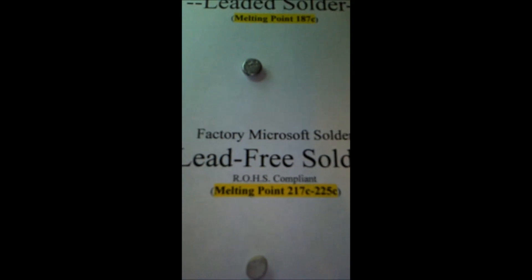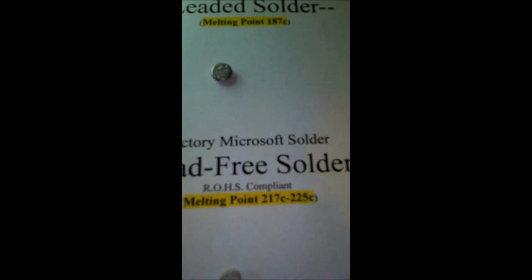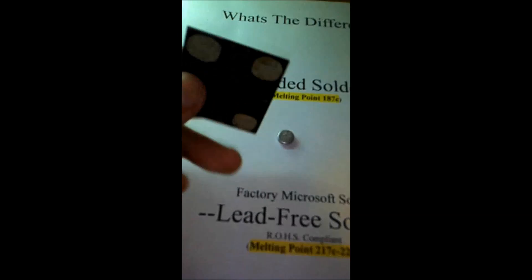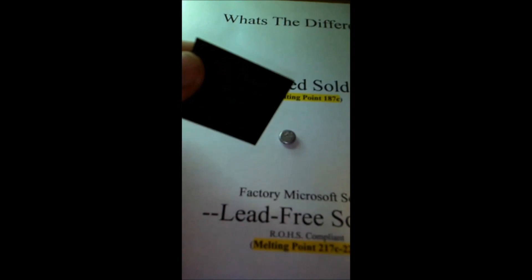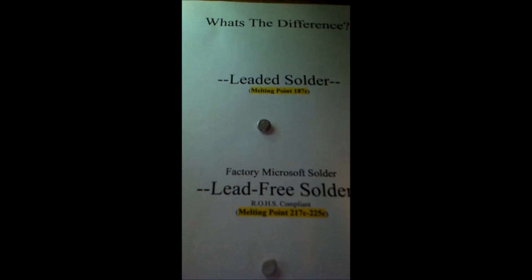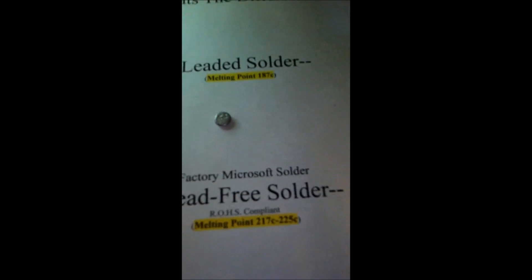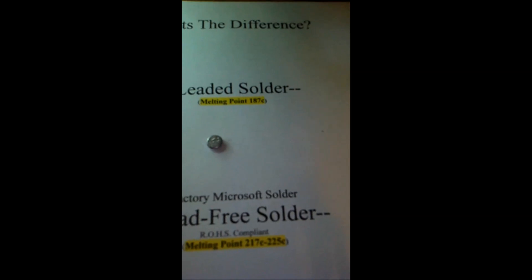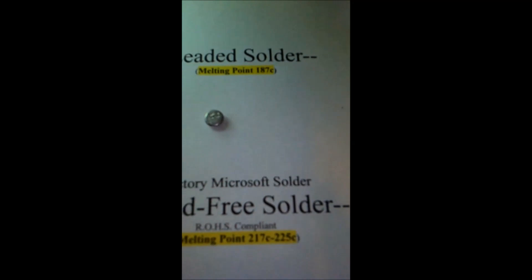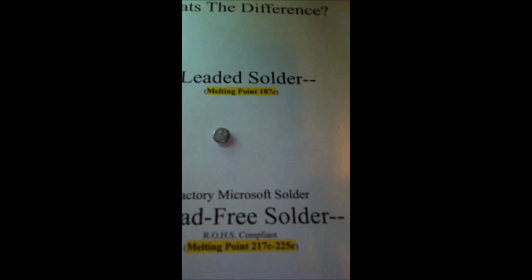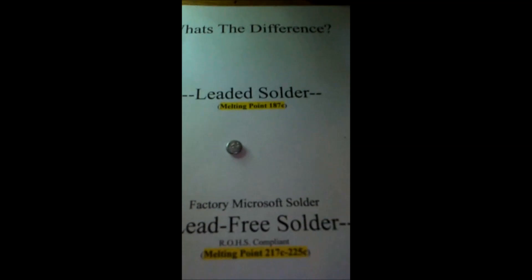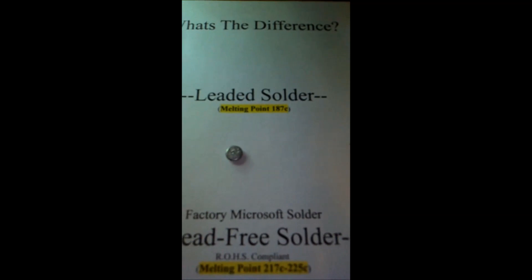What makes PlayStation and Xbox special is the extremely large ball grid array package and the amount of heat focused on that one specific chip. That's why 99% of the time only that chip needs to be reballed. Out of a couple hundred Xboxes I've reballed with leaded solder, I've seen maybe one or two come back — and that was because someone had previously warped the board or it wasn't seated properly.